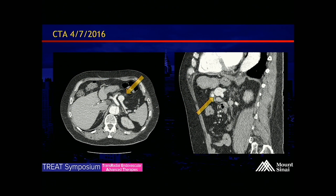As you can see on these two CTA images, the arrows are pointing to our saccular aneurysm. The inflow and the outflow are both on top of each other on the sagittal image. We currently have our catheter through the outflow of the aneurysm next to the splenic artery.